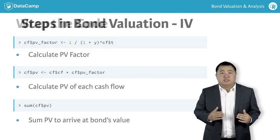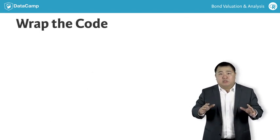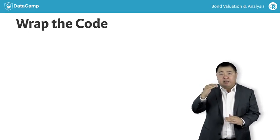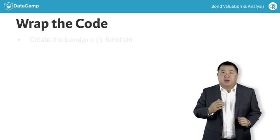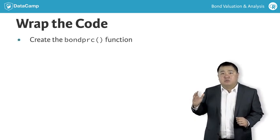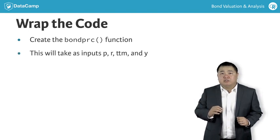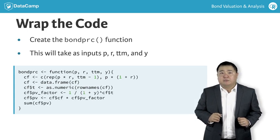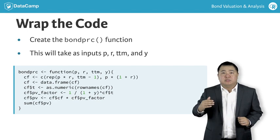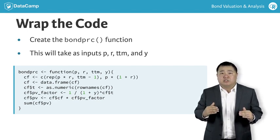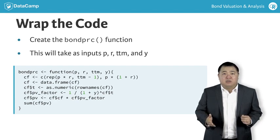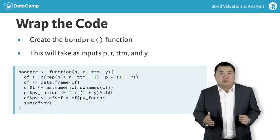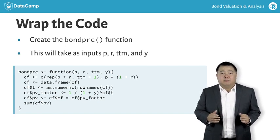The final step in the function writing process is to wrap the code with one line at the beginning and another line at the end. In the first line, we set up the bond valuation function, bond_PRC. The bond_PRC function takes its inputs P, R, TTM, and Y. The first line ends with an open curly brace, after which we see the six lines of bond valuation code we discussed previously. Finally, we add the last line of code below, which is simply a closed curly brace to end the function. This completes our bond valuation function.